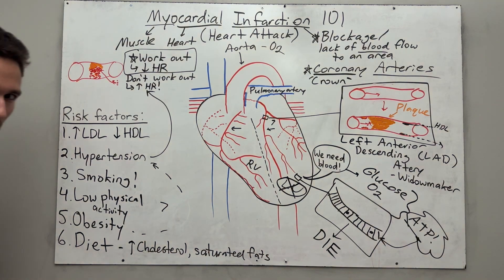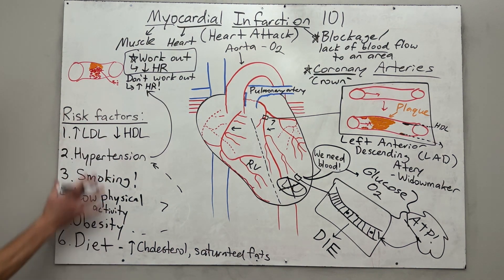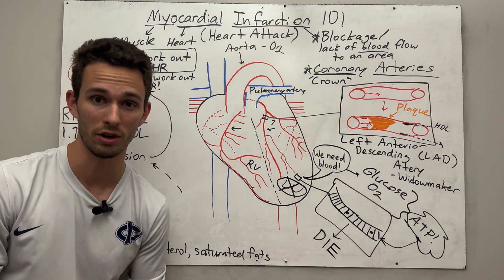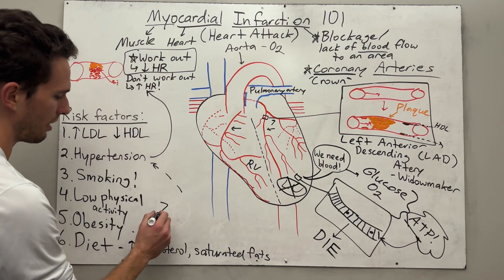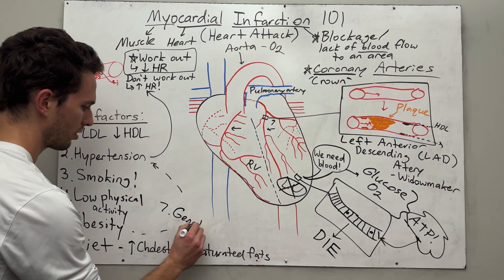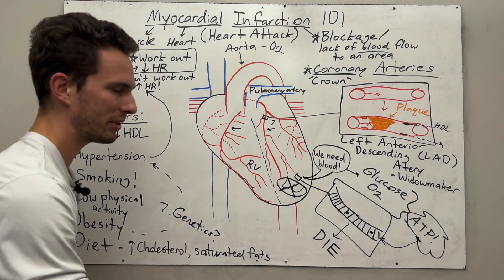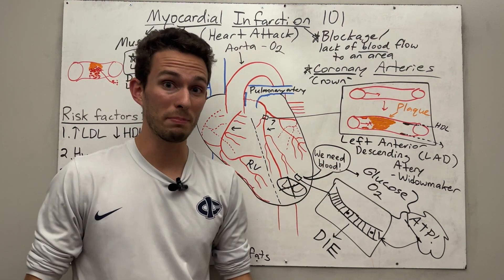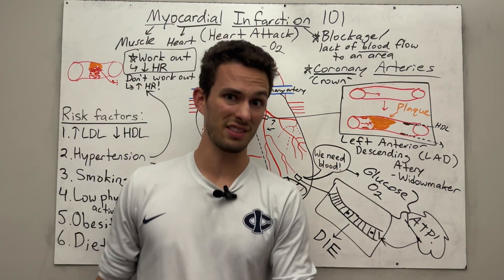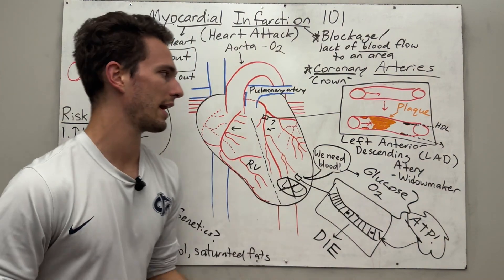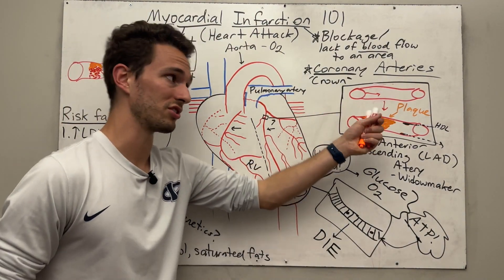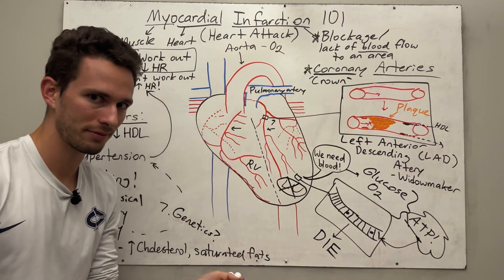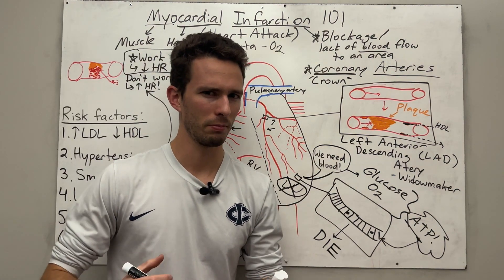I saved the most interesting one for last. All of those risk factors seem like things we could control with lifestyle changes — eating healthier, exercising more, not smoking. But the seventh risk factor is actually genetics. If you have a family history of heart disease, you will just have a higher risk factor for forming these plaques. Some people, through no fault of their own, doing all the right things and eating healthy, could still have coronary artery disease and blockages in the coronaries, therefore potentially leading to heart attacks.